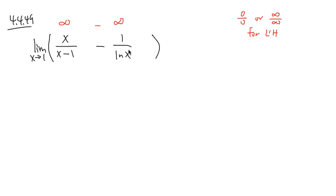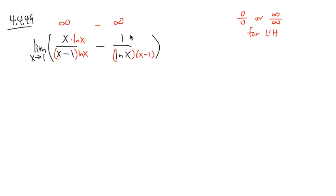In order to combine two fractions, we first need to have the same denominator. Here we have (x minus 1) and ln x. For the first fraction, I will multiply numerator and denominator by ln x. And for the second fraction, I will multiply numerator and denominator by (x minus 1). With that, we are going to continue.